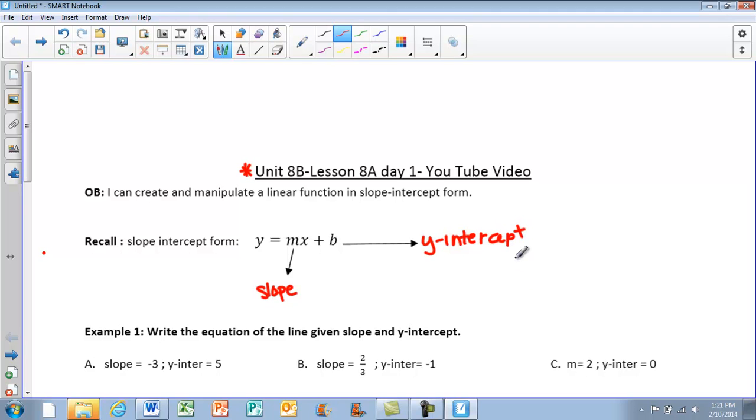Last unit, we spent a lot of time actually graphing these equations, spent a lot of time looking at it in standard form versus slope-intercept form. Today what we're going to focus on is writing the equations in slope-intercept form. So we don't necessarily have to graph them. We're more or less just going to be given the information to write them.